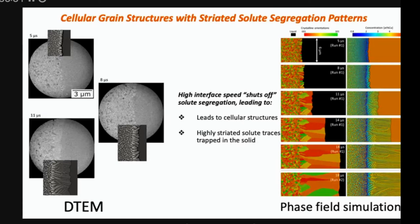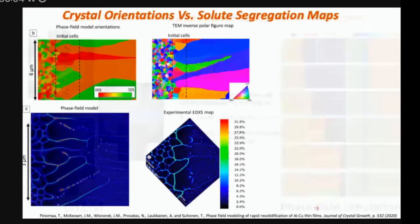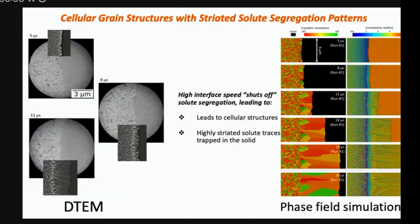So it seems like adding this effect of non-equilibrium partitioning leads to cellular structure and ultimately even almost a planar front. But within the planar front, whether in one grain or multiple grains, you get these striated solute patterns. And this is very different structurally from anything you're getting in dendritic patterns.